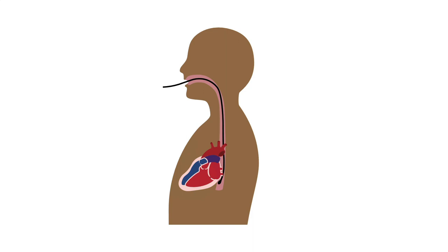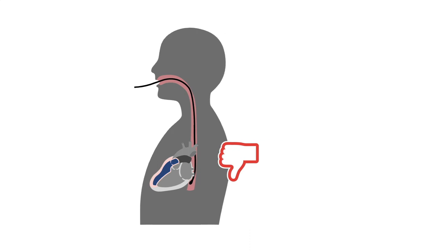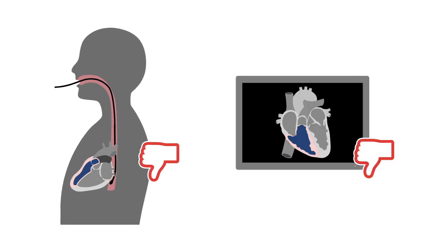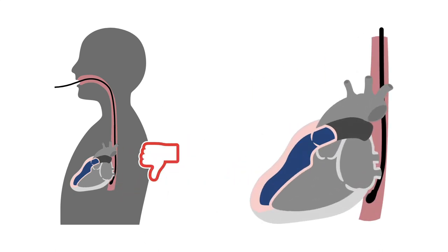The right ventricle is the most anterior structure of the heart. This creates difficulties in 3D echo with suboptimal image quality in most people because the right ventricle is simply far from the probe.